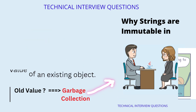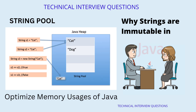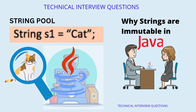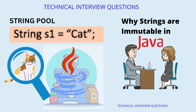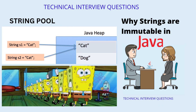This design decision was made for a number of reasons, including StringPool. The Java StringPool is a feature of the JVM that is used to optimize the memory usage of strings in Java. When a string literal is created in a Java program, the JVM checks the StringPool to see if an identical string already exists. If it does, the JVM will simply return a reference to the existing string, rather than creating a new one. This helps to optimize memory usage by eliminating the need to create multiple copies of the same string in memory.